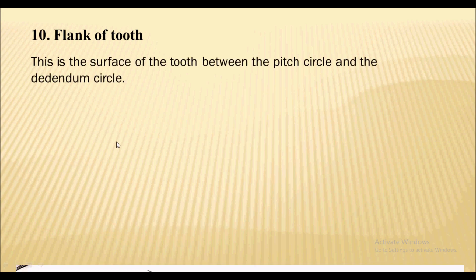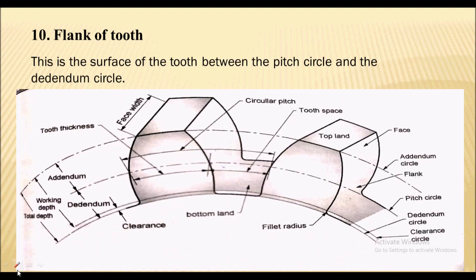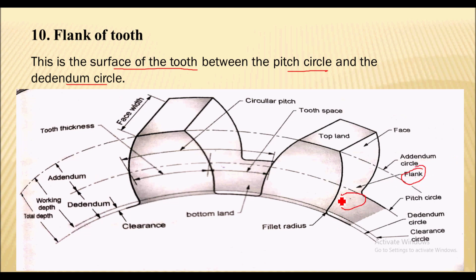Next is the flank of the tooth. It is the surface of a tooth between the pitch circle and the dedendum circle. The surface in between the pitch circle and the dedendum circle is nothing but the flank of the tooth.